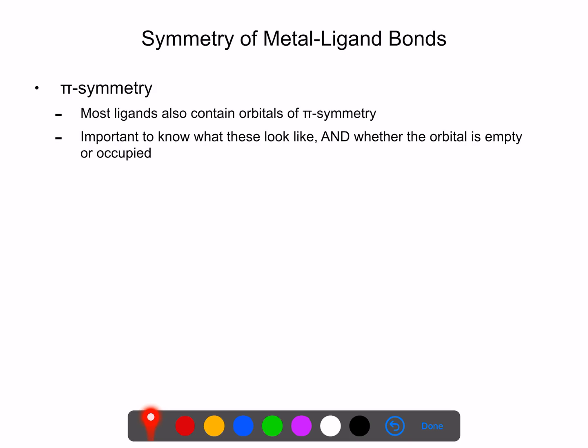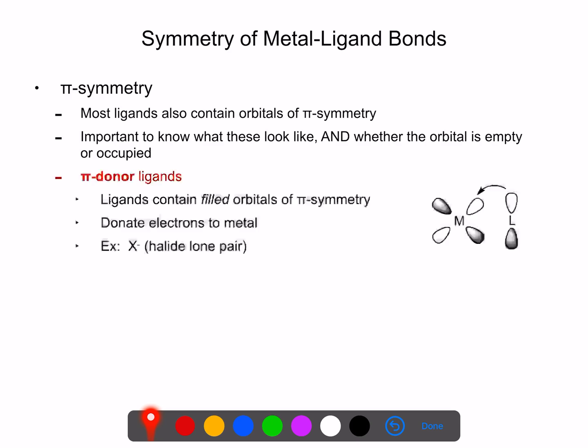But the second type of symmetry we can think about after sigma is what's known as pi-symmetry. And many ligands contain pi-symmetry bonding between the metal. And what's important about these is we need to understand what orbitals are present and which direction this bonding goes in. For example,